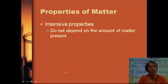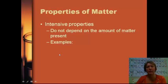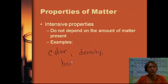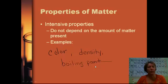On the other hand, we have intensive properties — properties that do not depend on the amount of matter present. No matter how much stuff we have, we can identify this property as the same. One example is color; the color doesn't change. Density doesn't change — density is a measure of mass per volume, and that stays constant with a sample. For example, the boiling point — the temperature where a substance goes from a liquid to a gas — whether we have a very small or very large sample, the boiling point stays the same. These are all examples of intensive properties.